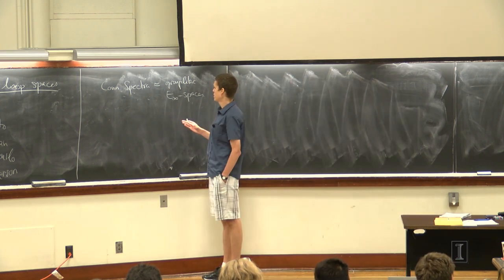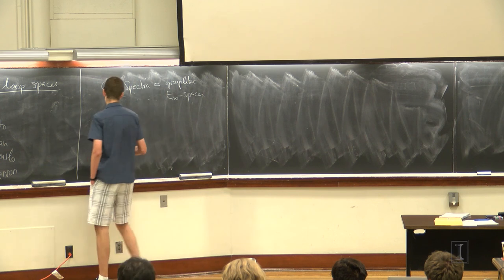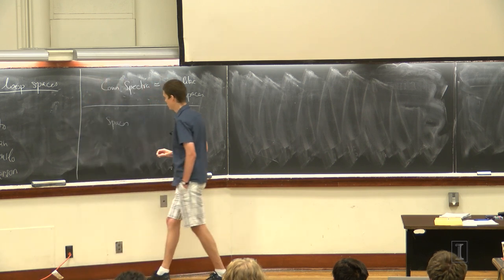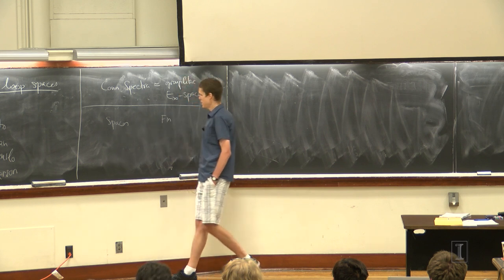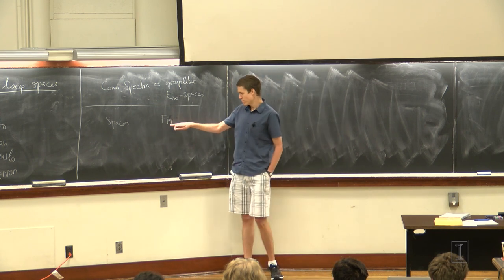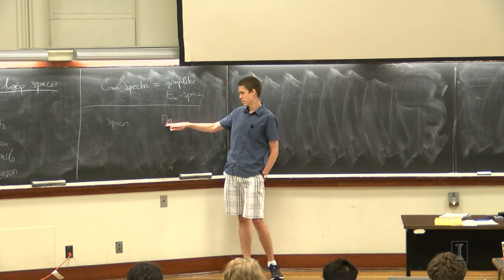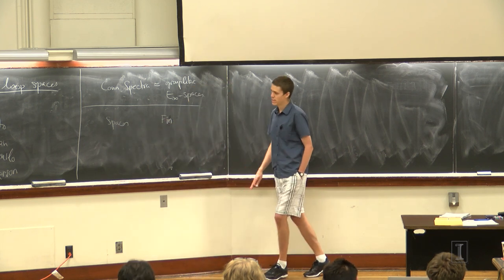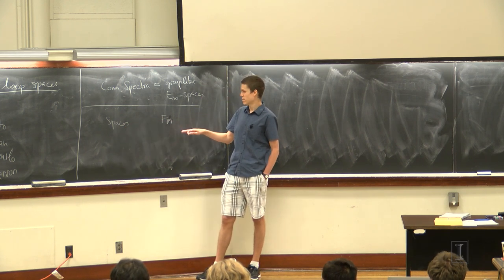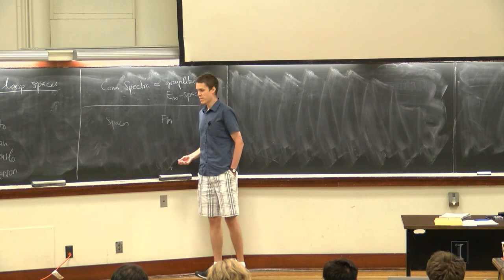Let's talk a bit more about spaces first. I'd like to recall what an infinity space is. I'm going to relate the category of spaces with the category of finite sets. This category is really generated by one object and finite co-products. Similarly, the infinity category of spaces is freely generated by one object under arbitrary co-limits. There's a formal construction that interpolates between finite co-products and arbitrary co-limits, which goes by the name of the non-abelian derived category.